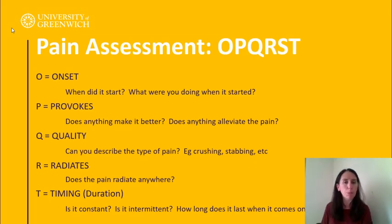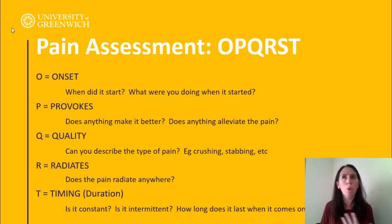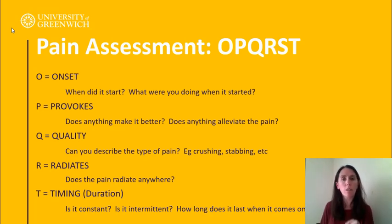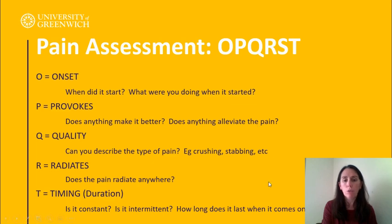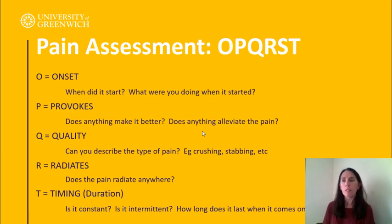A lot of people get timing wrong in OSCEs. In OPQRST, O is onset and T is timing — but timing means duration. Is the pain there all the time? Does it come on suddenly and go? How long does it last? Is it constant or intermittent? That's really important.